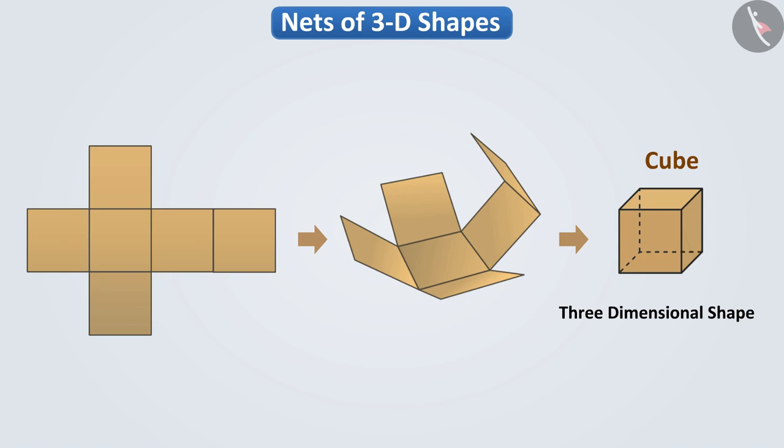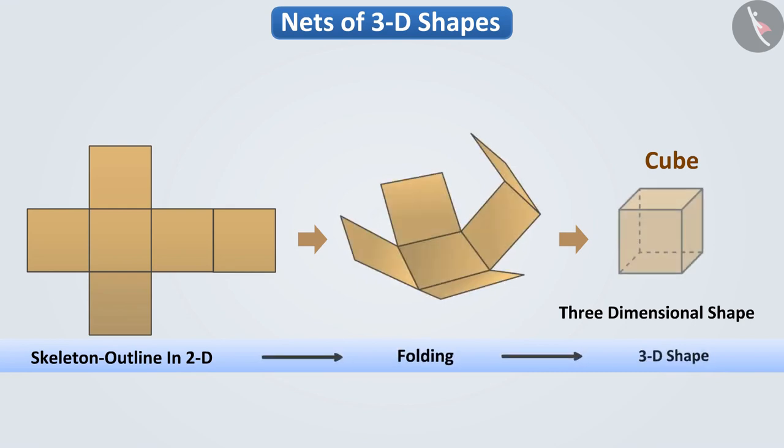Thus, here we have obtained a 3D shape with the help of a structure. A skeleton outline in 2D which, when folded, results in a 3D shape is called a net. Like this is a net of a cube.